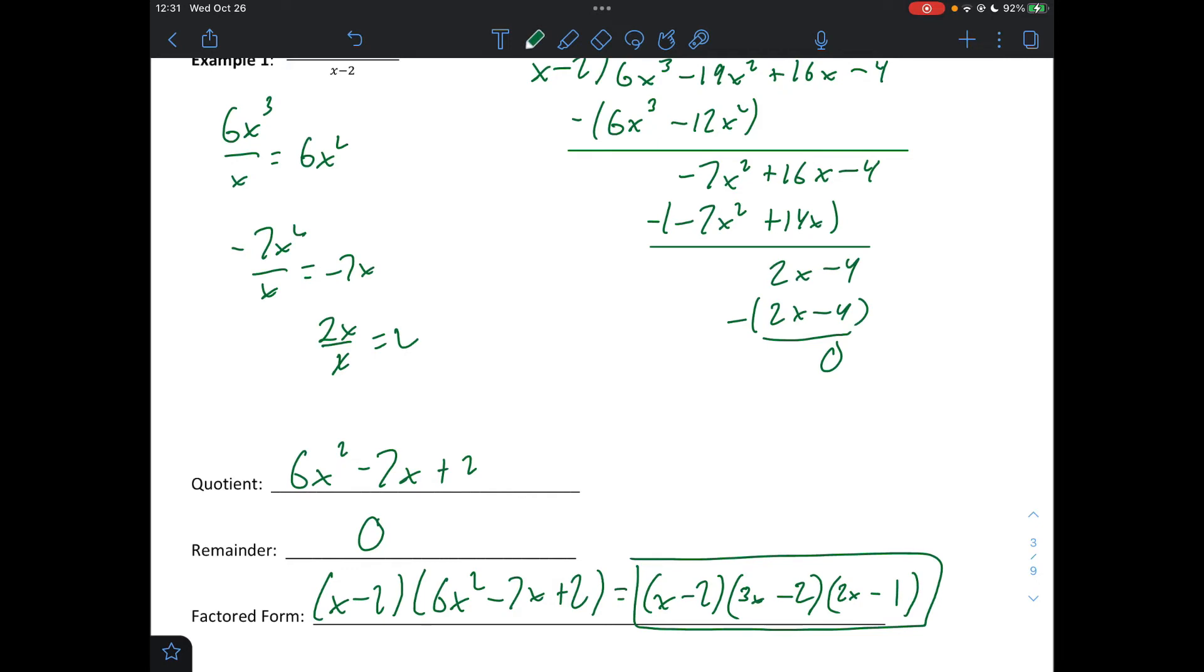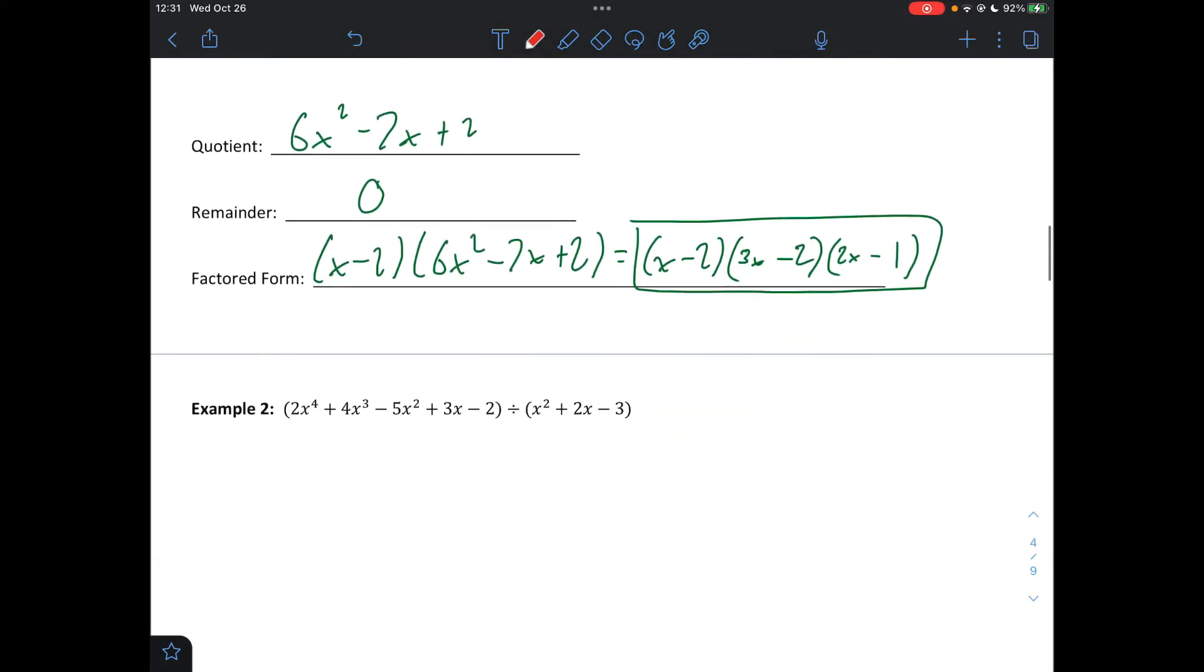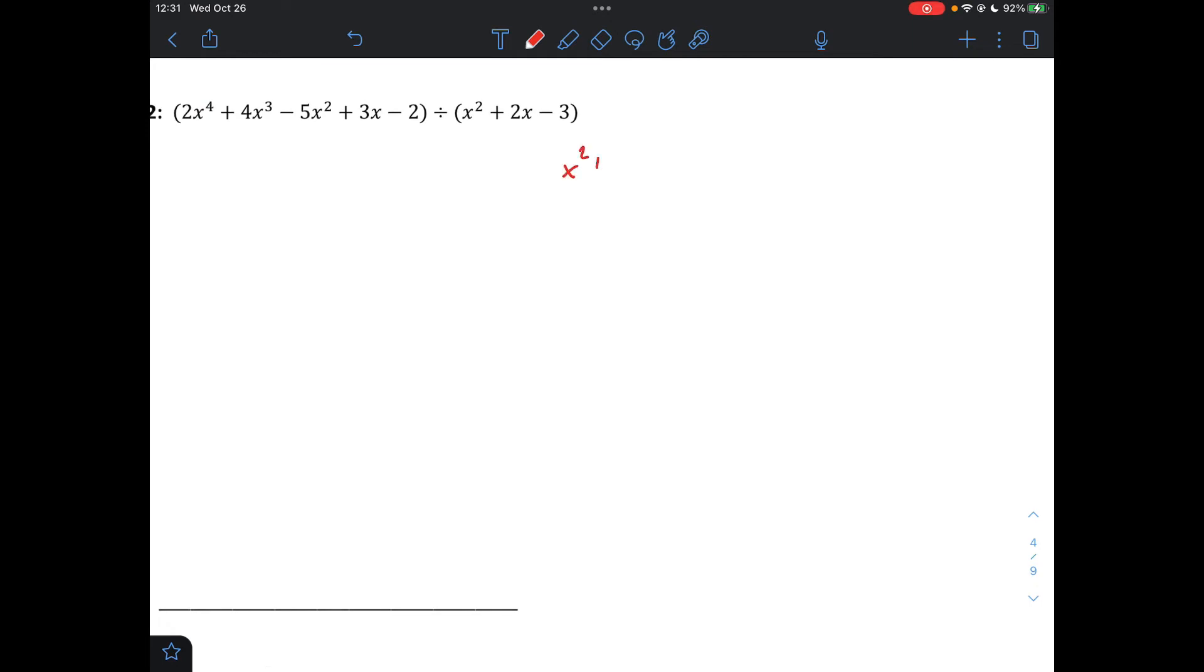Okay, let's take a look at another example. So we're going to go x squared plus 2x minus 3 goes into 2x to the 4th plus 4x to the 3rd minus 5x squared plus 3x minus 2. Divide first term into first term. 2x to the 4th divided by x squared gives us 2x squared. Multiply back: 2x to the 4th plus 4x to the 3rd minus 6x squared.